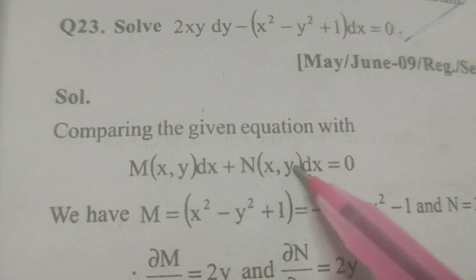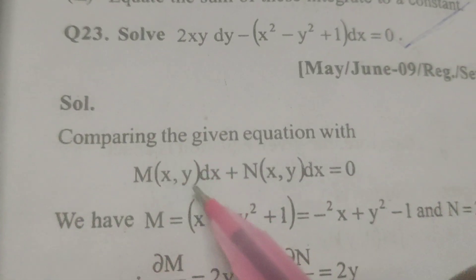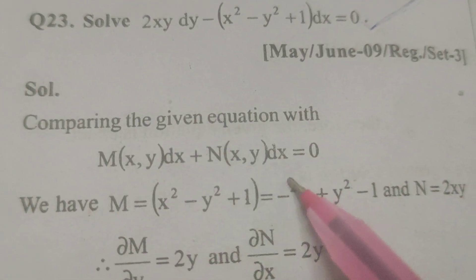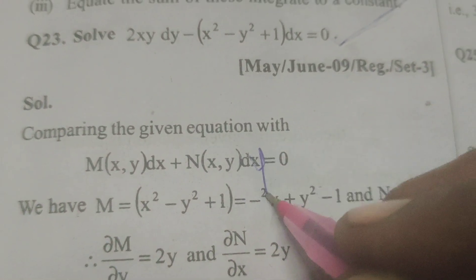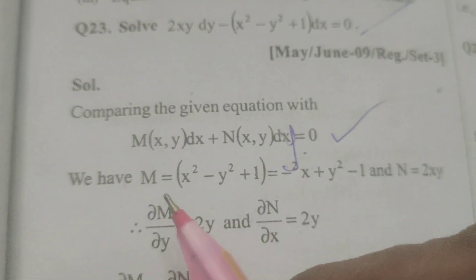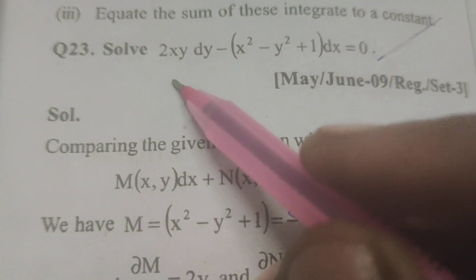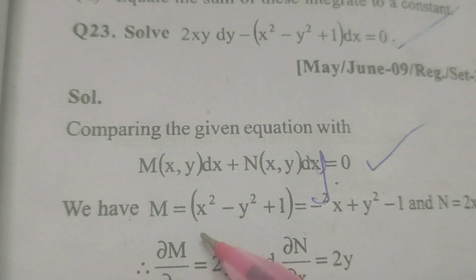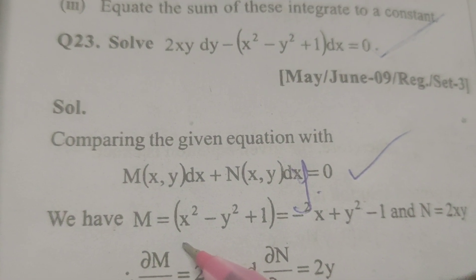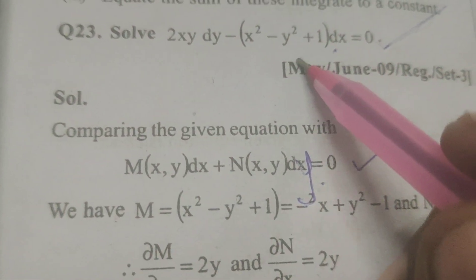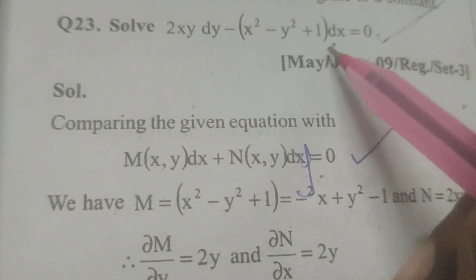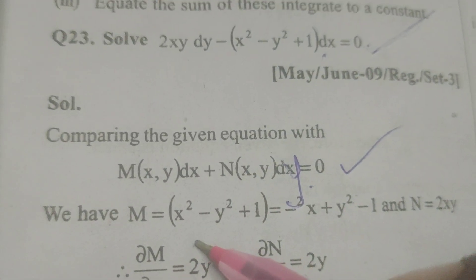Comparing the given equation with M(x,y)dx + N(x,y)dy = 0, we have M = (x² - y² + 1). Here dx is there, therefore M dx means x² - y² + 1. This is M.